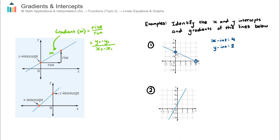This could be completed using rise over run, but I'm going to use the coordinate formula to demonstrate how it works. I need to identify the coordinates of two points on the line, and I've already identified those two. This coordinate here is (0, 2), and this one is (4, 0). I label one as coordinate 1 — x1, y1 — and one as coordinate 2 — x2, y2. It doesn't matter which you call 1 or 2; reversing them gives the same answer, just with more negatives along the way.